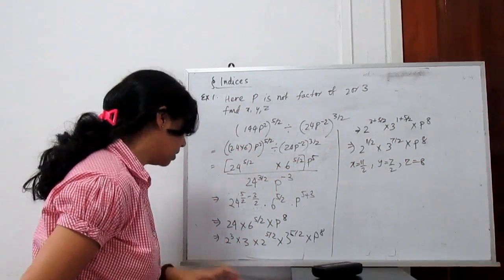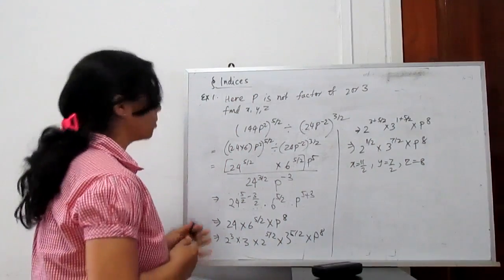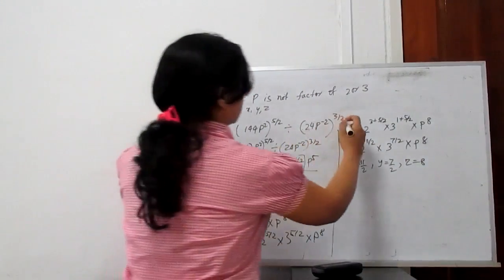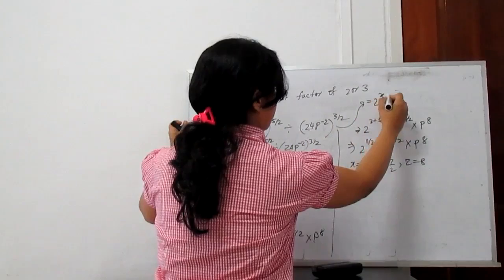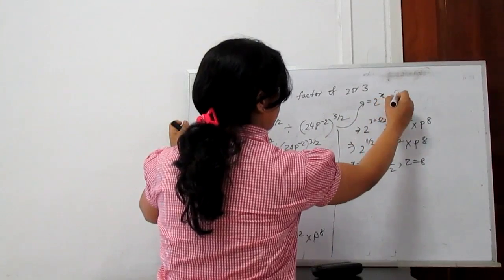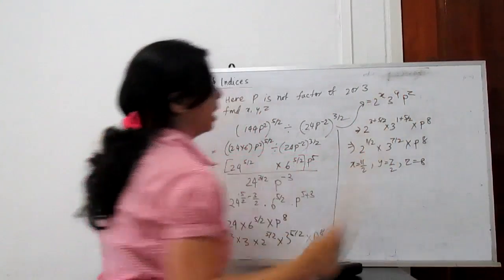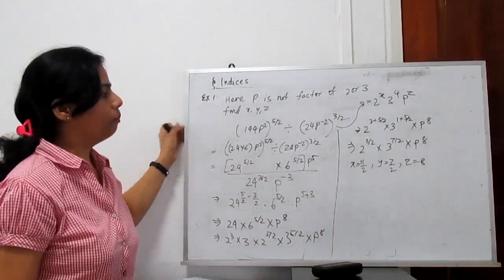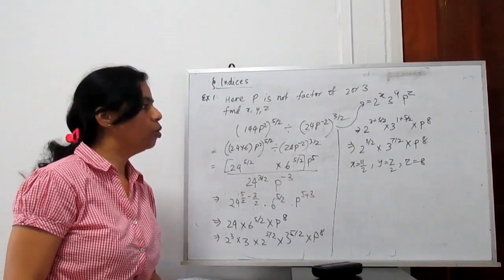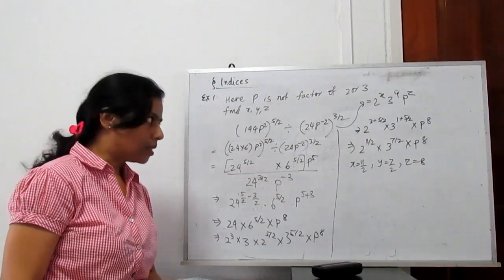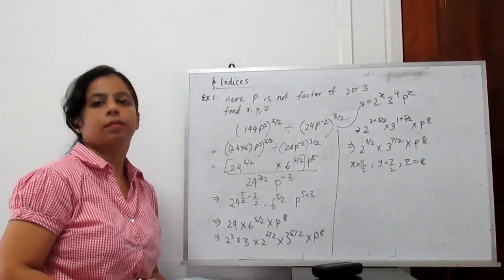Comparing with 2 to the power x times 3 to the power y times p to the power z on the right hand side, we can identify x equals 11 by 2, y equals 7 by 2, and z equals 8.